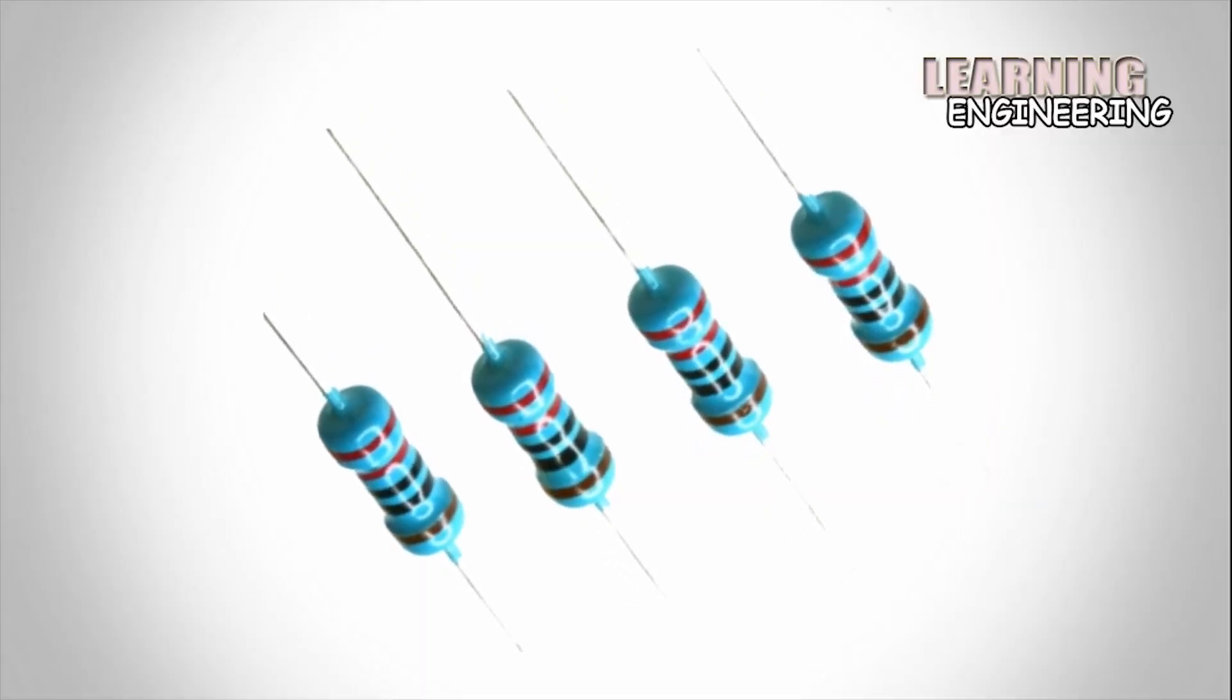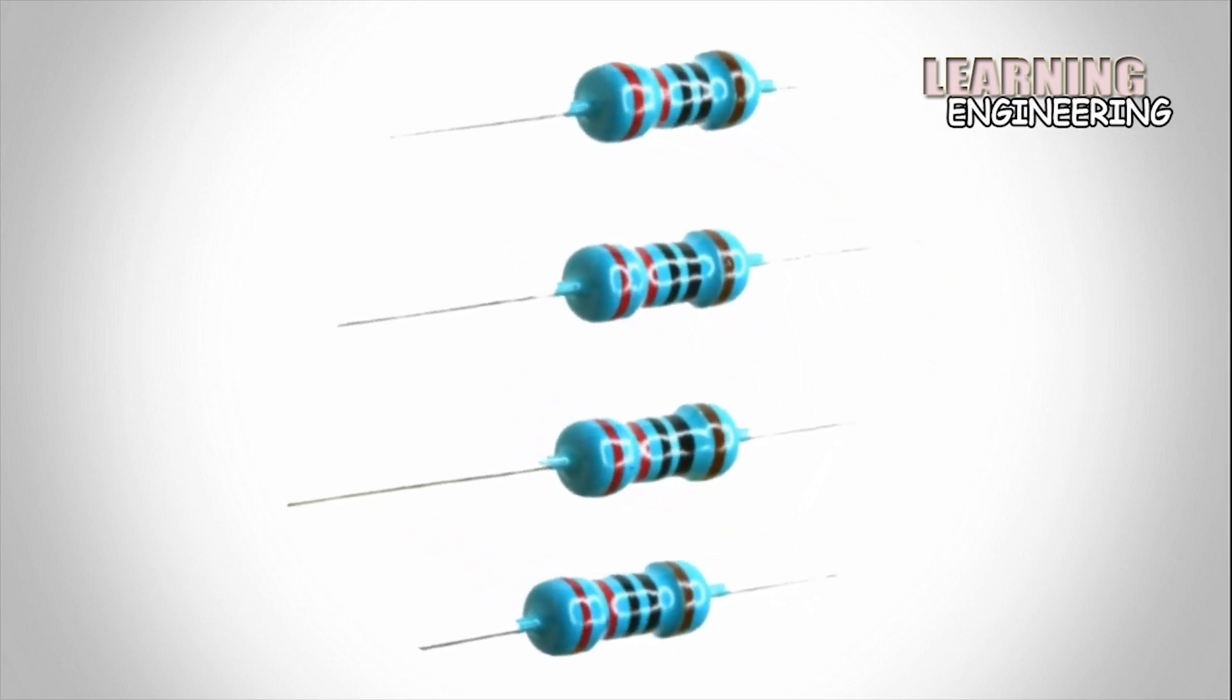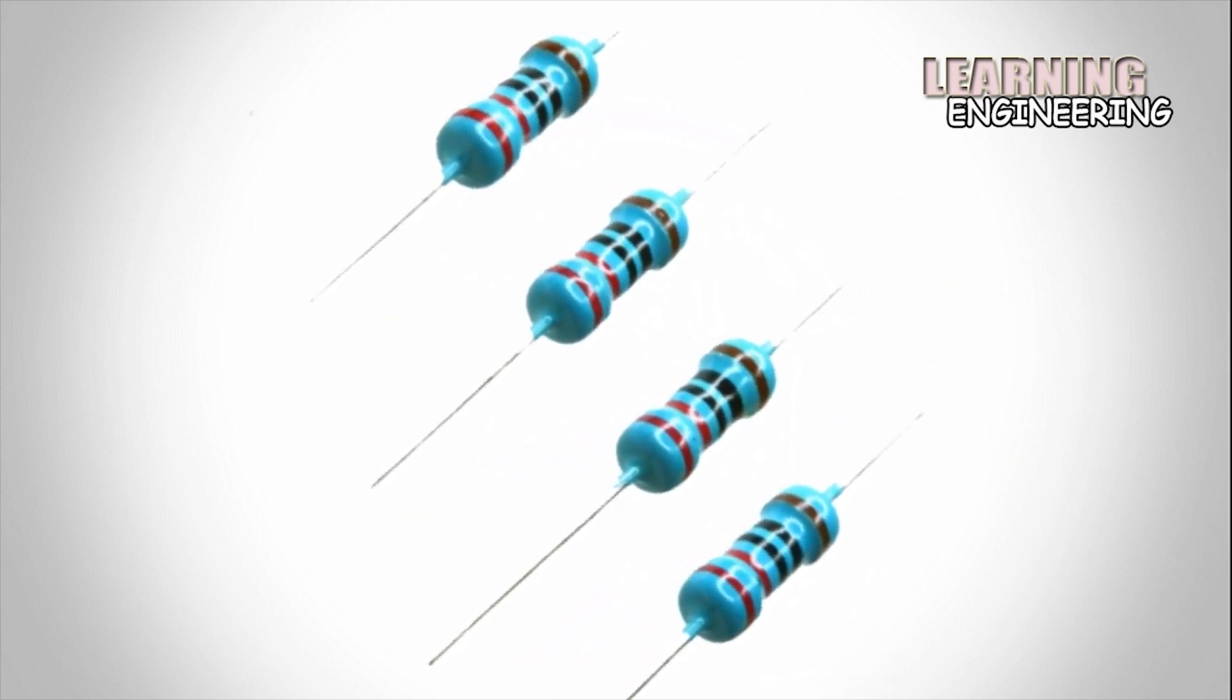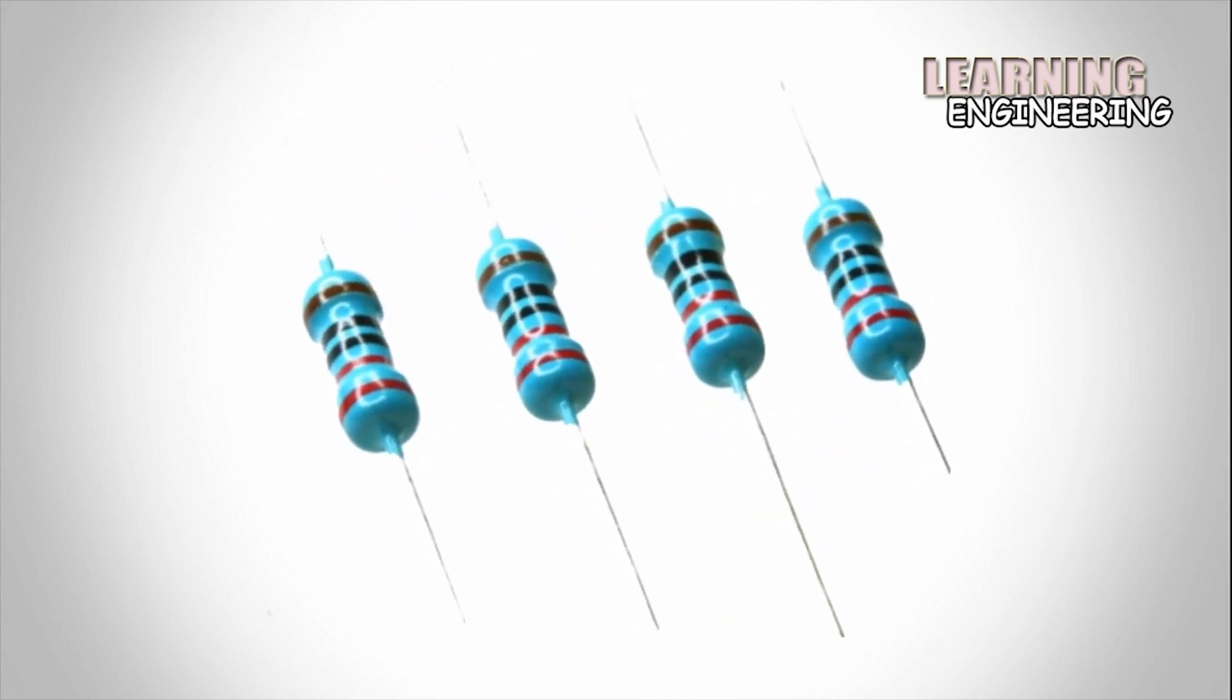The electronic color code is used to indicate the values or ratings of electronic components, usually for resistors, but also for capacitors, inductors, diodes, and others.